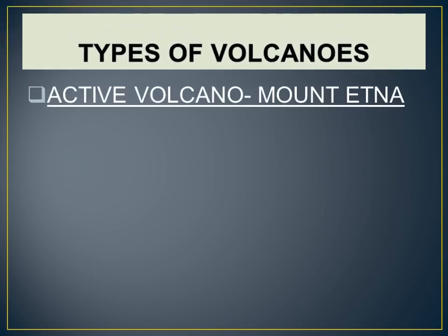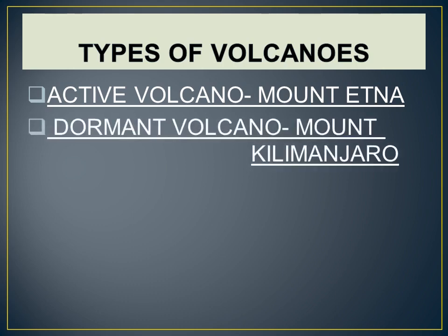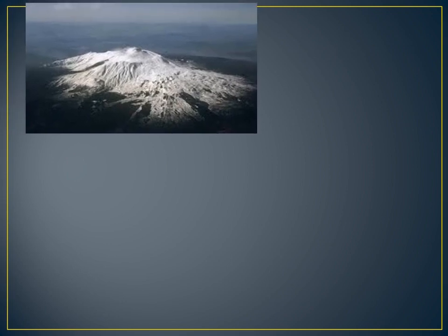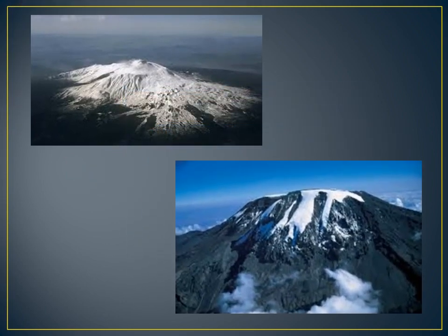Volcanoes that erupt regularly are called active volcanoes. For example, Mount Etna in Sicily, Italy, has been erupting for the past several years. Volcanoes that have not erupted for a long time but can erupt again are called dormant volcanoes. For example, Mount Kilimanjaro in Tanzania, Africa, is a dormant volcano. Now we are going to see the picture of an active volcano and a dormant volcano.